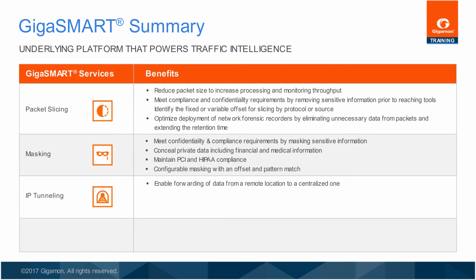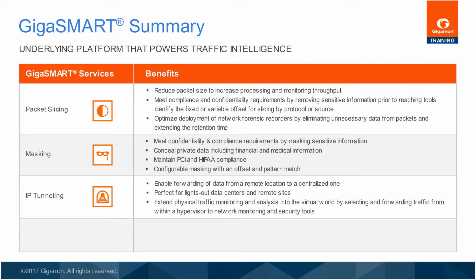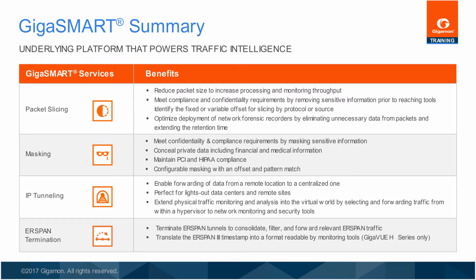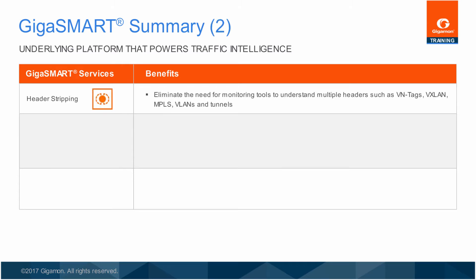IP Tunneling encapsulates and forwards packets to monitoring tools between networks on separate routed paths. This feature enables routing of data from lights-out data centers to central monitoring facilities and extends visibility into the virtual fabric. Using ER-span tunnel decapsulation, GigaSmart can act as the receiving end of an ER-span tunnel, decapsulating span or mirrored traffic sent from a Cisco switch or router. Both ER-span Type 2 and Type 3 header decapsulation are supported. Header stripping eliminates the need for monitoring tools to understand protocols such as VLANs, MPLS, VN Tags, VXLAN, and some tunneling protocols, allowing virtually any monitoring or security tool access to traffic by removing headers as packets are forwarded.